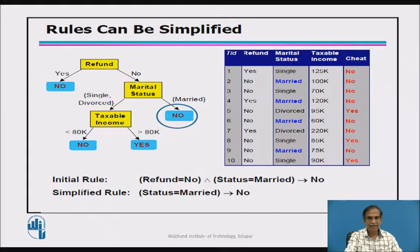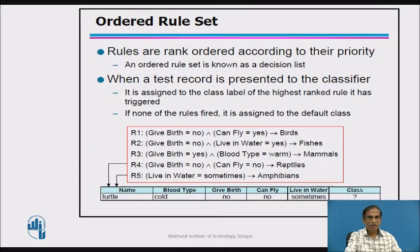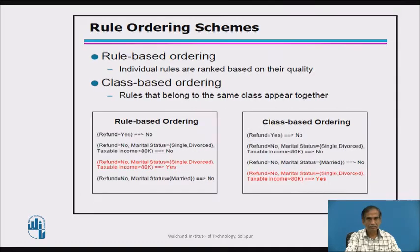Rules can be simplified as initial rules or developed into more complex rules. Rules are no longer mutually exclusive when using an ordered or unordered rule set with voting schemes, and no longer exhaustive when using a default class. Rule ordering schemes rank individual rules based on their quality, or rules belonging to the same class appear together.